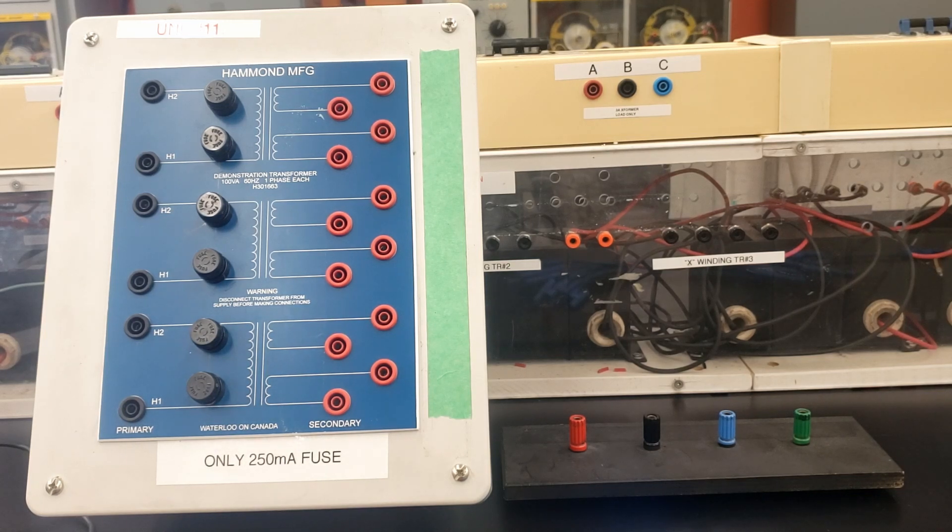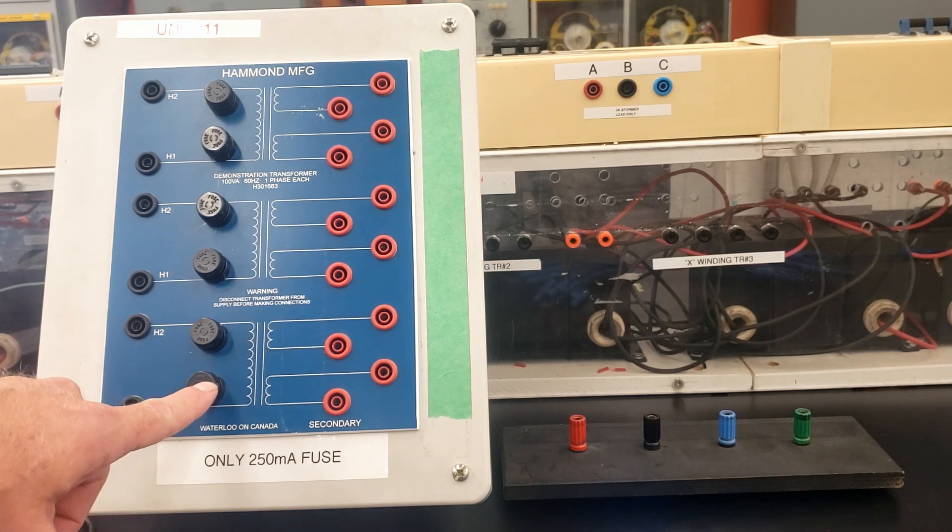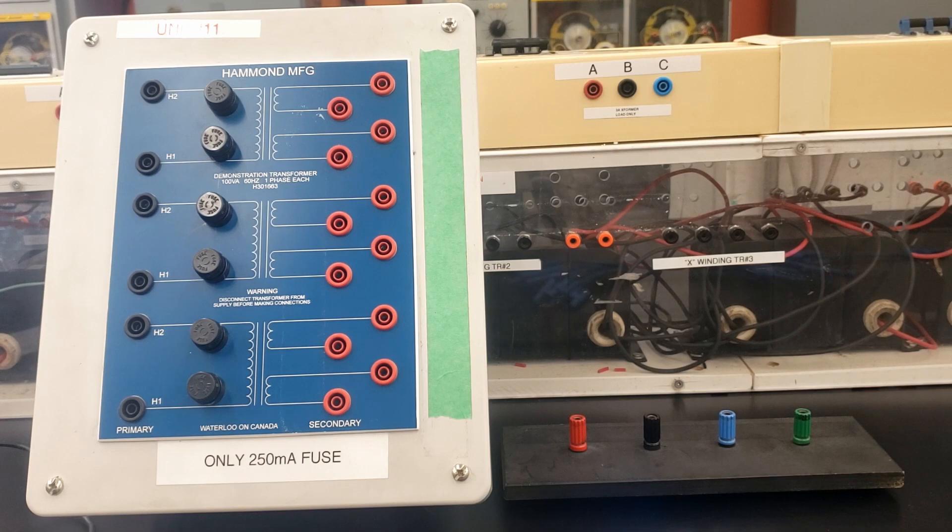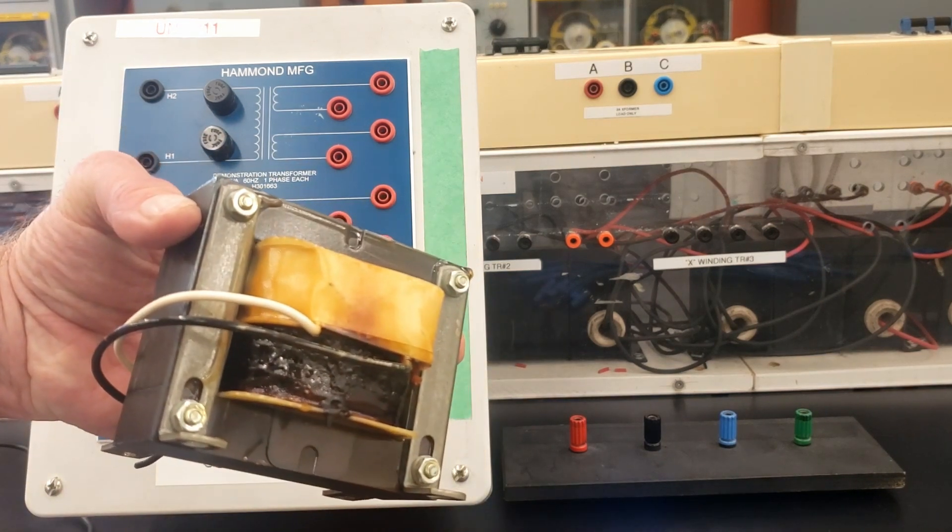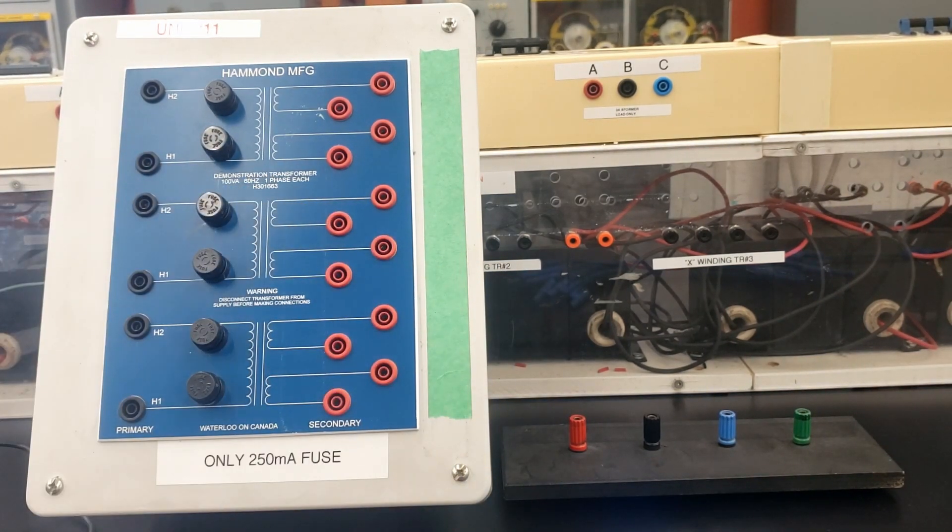You're using the 3 amp breaker, and you're making sure that you're only putting a 250 milliamp fuse in here. Otherwise, you're responsible for smoking a pancake. Let's move on now. The first one we're doing is the single-phase transformer.